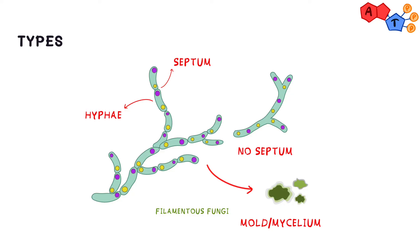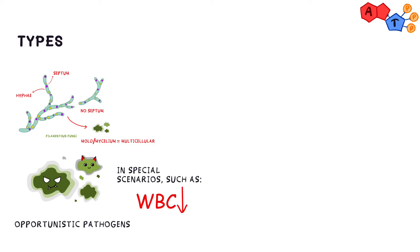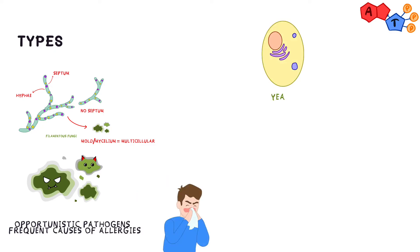Molds are usually opportunistic pathogens, meaning that they can only cause an infection in immunocompromised patients. Mold antigens are one of the most frequent causes of allergies. Yeast, on the other hand, are unicellular spherical structures budding off each other, almost like taking a small piece of dough and pinching little smaller balls out of it.